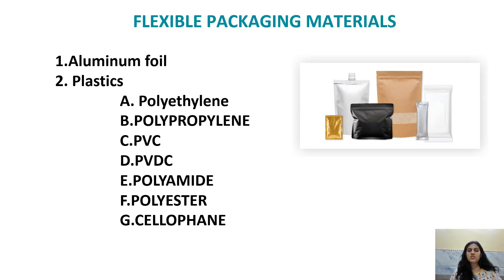Flexible packaging includes aluminum foil and different types of plastics such as polyethylene, polypropylene, PVC (polyvinyl chloride), and PVDC, which are used for poultry, cured meat, snacks, tea, coffee, and modified atmosphere packaging. Other flexible materials include polyamide, polyester, and cellophane.